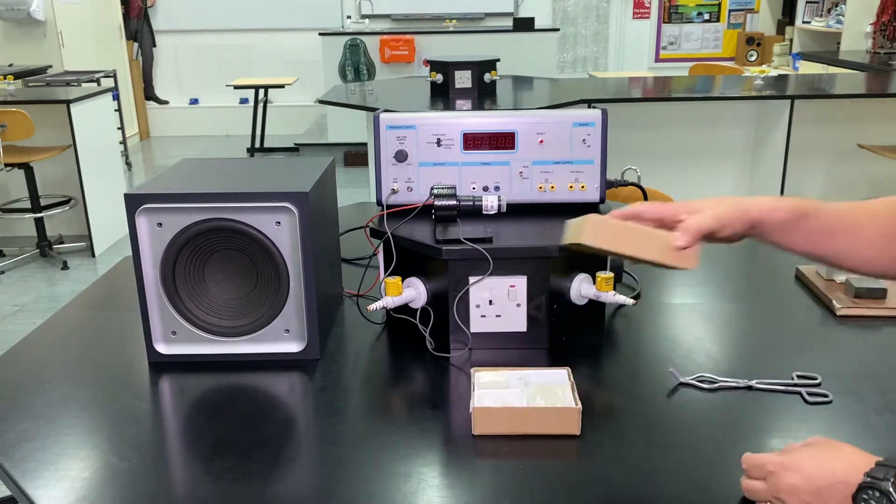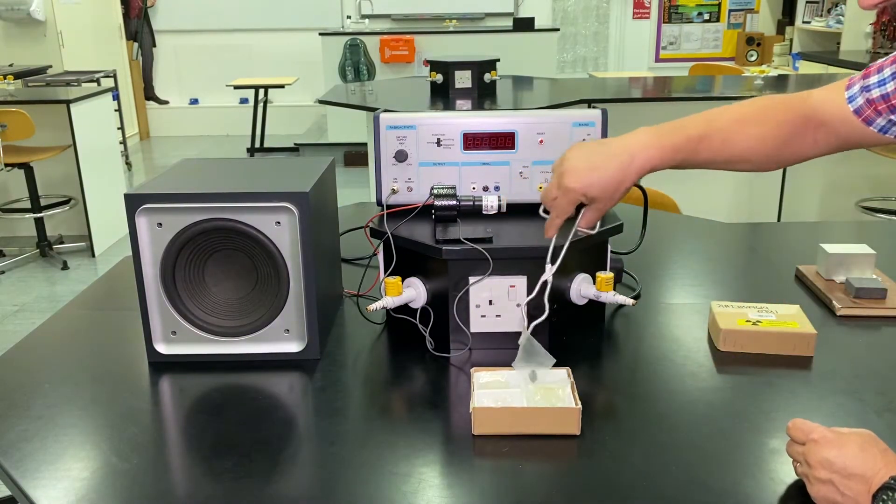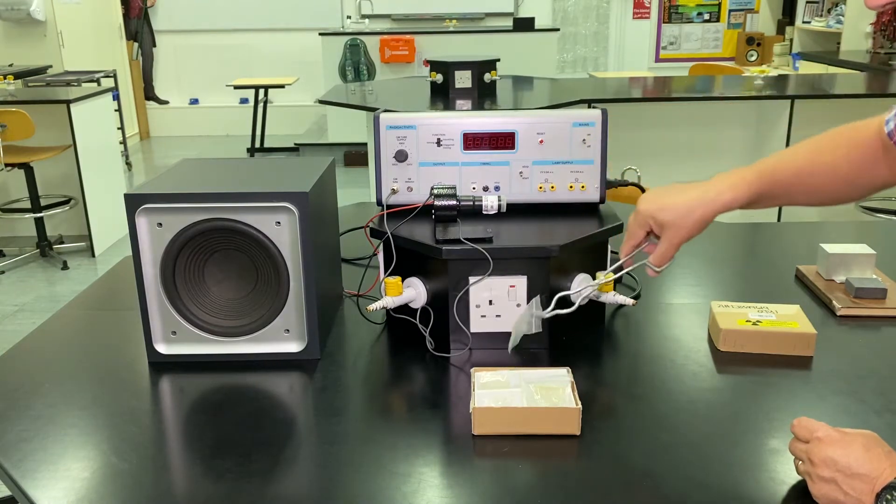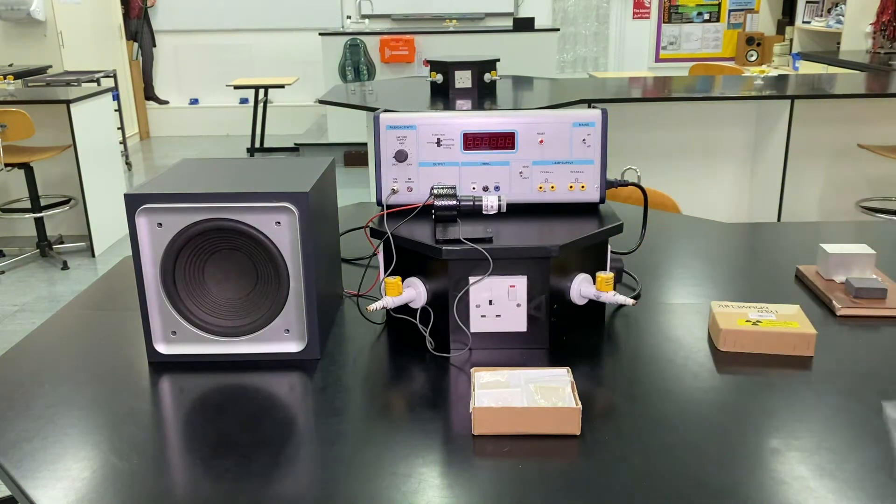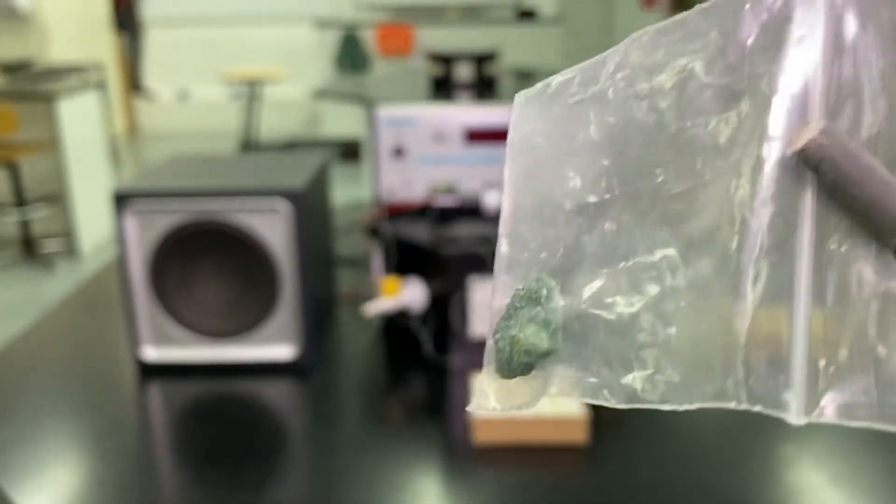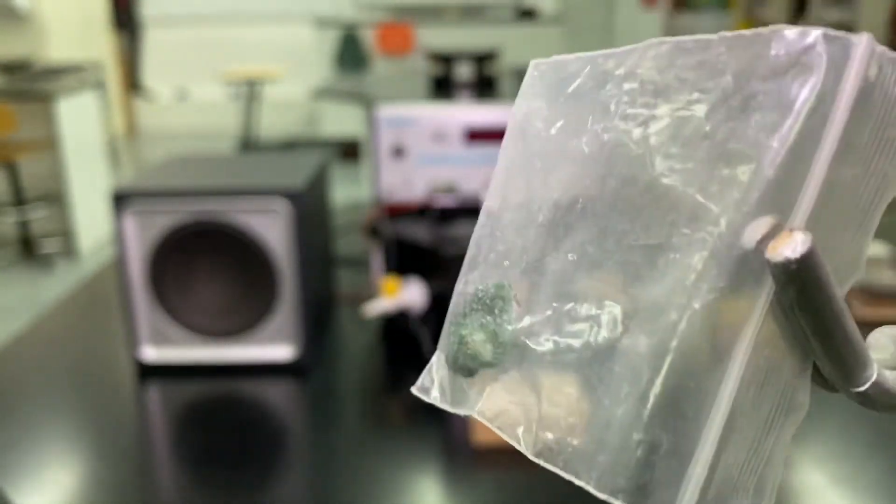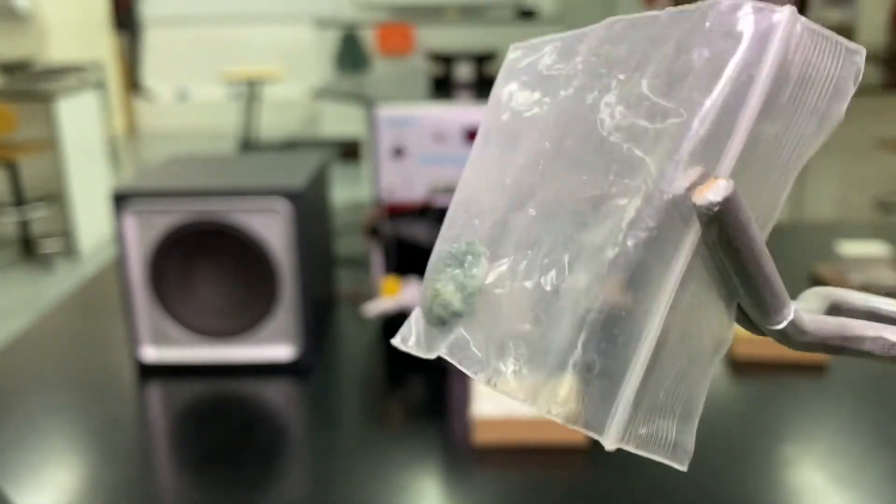Now, we've got four samples of rocks from four different parts of the world here. Here's the first one. I'll just show you this, bit of a close up. Now as you can see there, just looks like a regular piece of rock but it's a bit green.